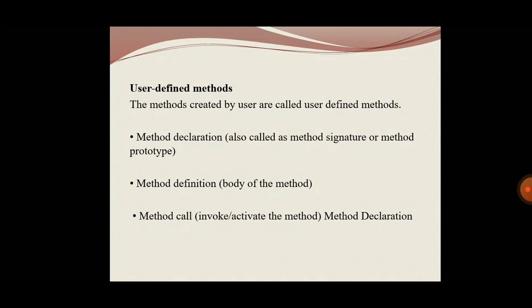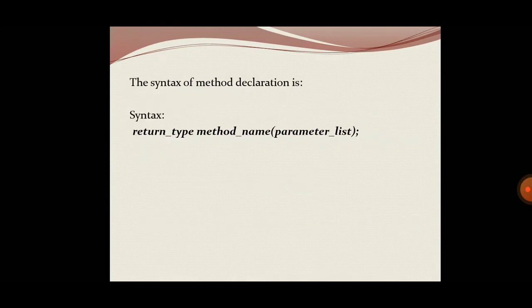The next is the method created by the user, which is called the user-defined method. In user-defined methods, we have method declaration, method definition, and method call. Method declaration is just a method prototype. The syntax is: return type, method name, parameter list. The return type specifies the data type of the value returned by the method — it will be void if the method does not return any value. The parameter list specifies the list of values accepted by the method, and the method name indicates the unique name assigned to the method.